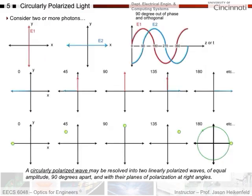Let's look at another type: circularly polarized light. Consider two photons — here's the E field for the first photon polarized in the y plane, and here's the E field for the second photon polarized in the x plane, both moving in the z direction. The key point is that these are 90 degrees out of phase: one peaks out 90 degrees before the other.